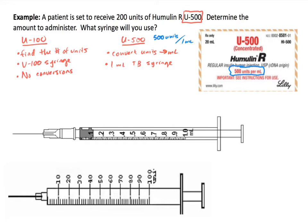This conversion is done using any of the methods learned in this course. Using the nursing formula — desired over have times quantity — the desired amount is 200 units, what we have available is 500 units, multiplied by the quantity of 1 mL, giving us 0.4 mL. The units cancel, leaving mL.